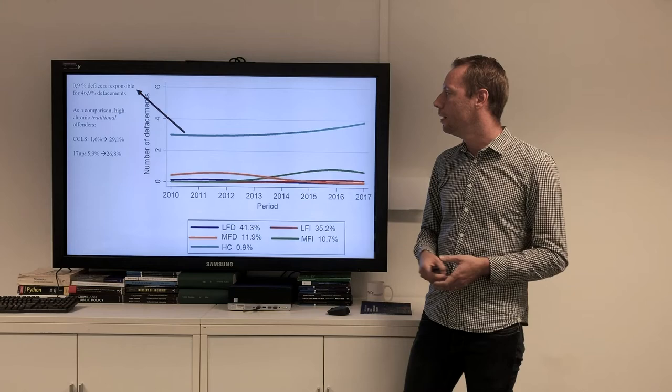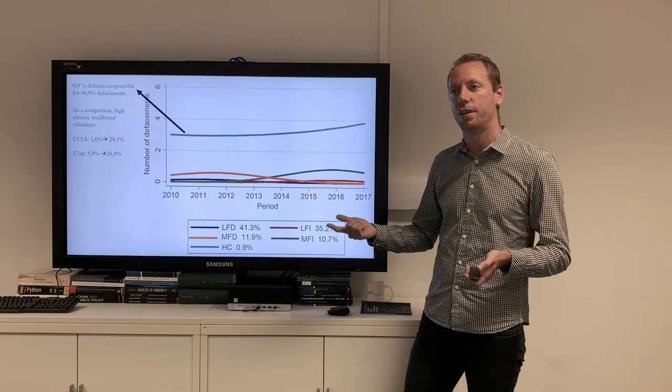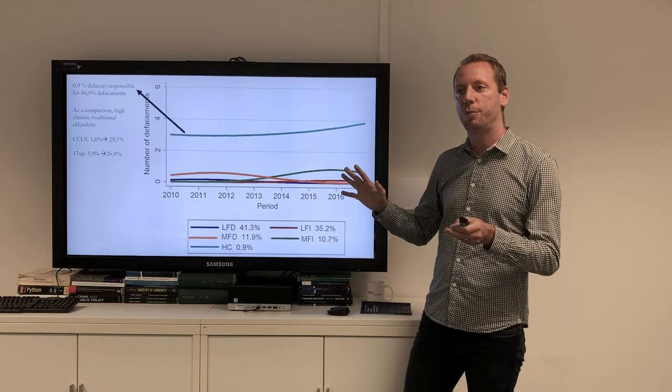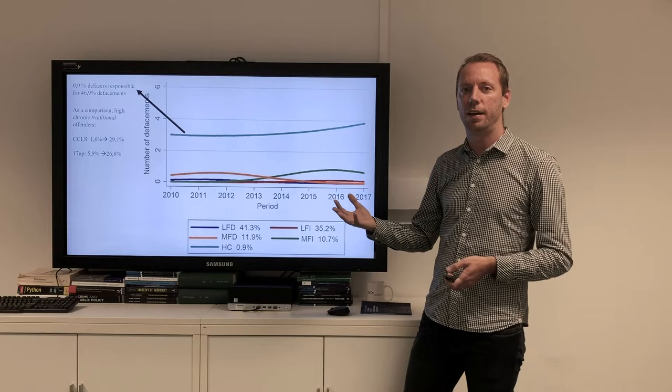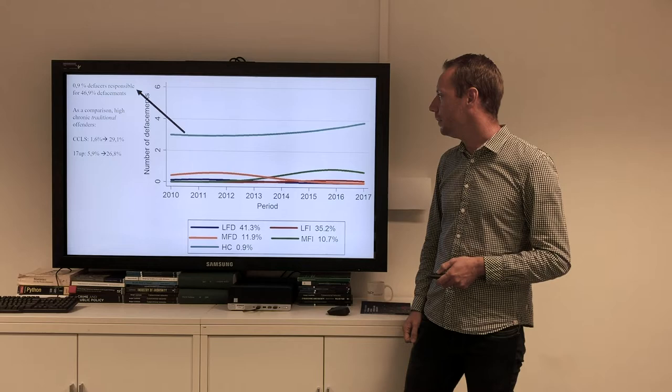For interventions, since this small group with only 33 defacers is so active, it makes most sense to target interventions on this group. Then it's important to get an idea who are those people, which methods they use, and things like that. We showed they often use SQL injections and file inclusion. So probably, if you want to stop these groups, you have to help websites to be prepared for those kinds of attacks. It would also be interesting if future research could get more into those really active groups to see why and how they commit defacements so they can be stopped.